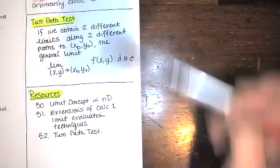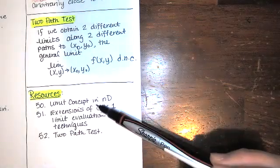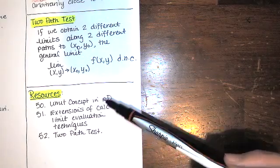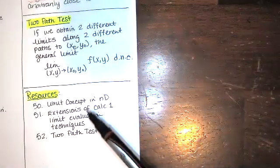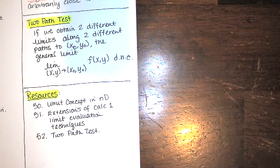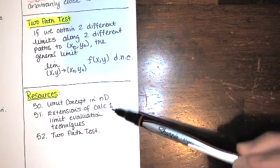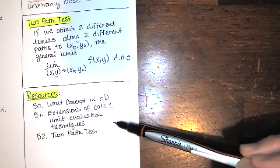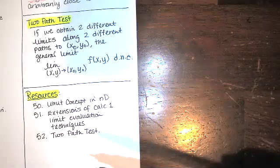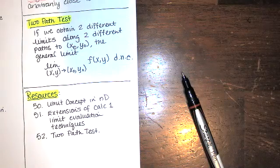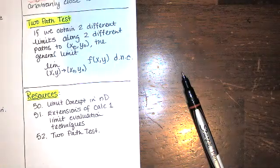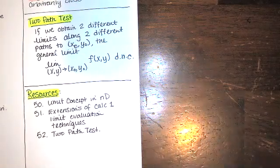There is a lot more information on the Analytic Geometry and Calculus 3 playlist regarding questions like this. Video 50 talks about the limit concept in n dimensions — starting in 2D, reviewing Calculus 1, then going to 3D with functions of two variables, then nD. Video 51 is an excellent review of all the Calculus 1 limit evaluation techniques, covering factoring and reducing, multiplying by the conjugate, clearing complex fractions — techniques for evaluating 0/0 indeterminate forms. And video 52 is a full video on the two-path test.